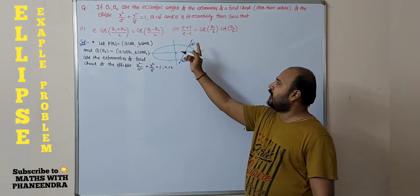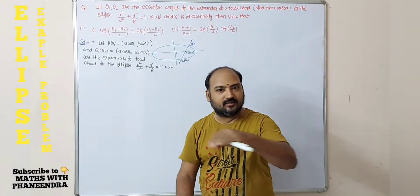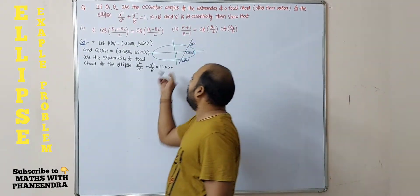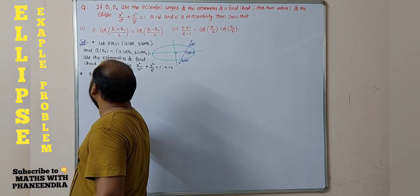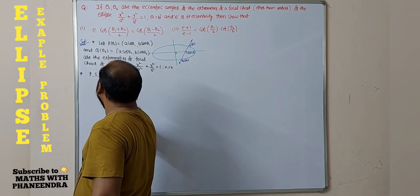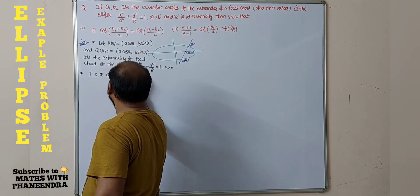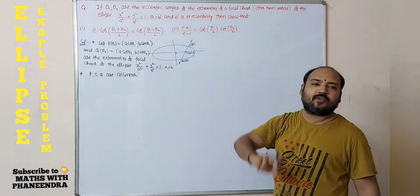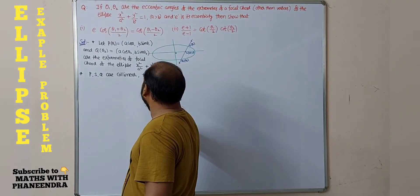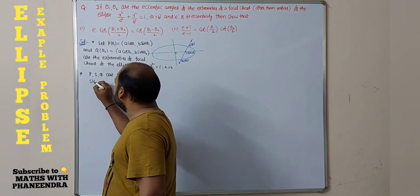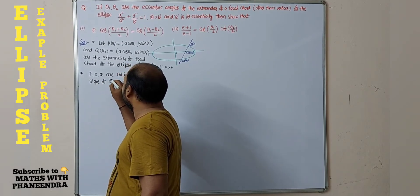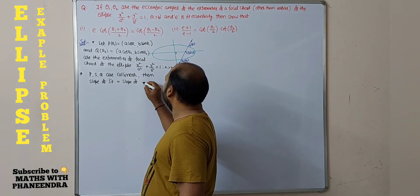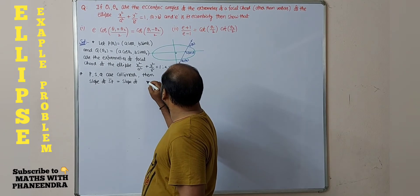By observing the points P, S, Q — they are collinear because they are lying on the same line, that is the focal chord. So P, S, Q are collinear. Whenever the points are collinear, slope of SP equals slope of SQ. According to the figure, slope of SP equals slope of QS.